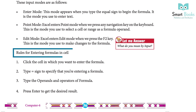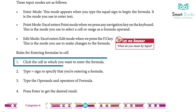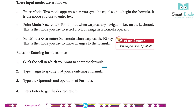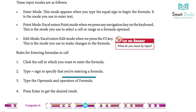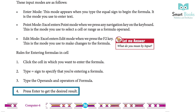Rules for entering formulas in cells: 1. Click the cell in which you want to enter the formula. 2. Type the equal sign to specify that you are entering a formula. 3. Type the operands and operator of the formula. 4. Press Enter to get the desired result.